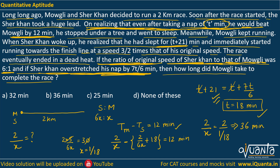Instead of considering the complex case where he woke up after T plus 21 minutes and ran at 3/2 times his original speed — where the equations would become very cumbersome — we just considered the original simpler case where he was napping for just 10 minutes, woke up, and ran, thinking he would beat Mowgli by 12 minutes. Using that equation and putting in the values, we get x and the answer equals 36 minutes. So option B is the correct answer. This was straightforward — form the equation yourself and if there is any doubt, please comment. Thank you.